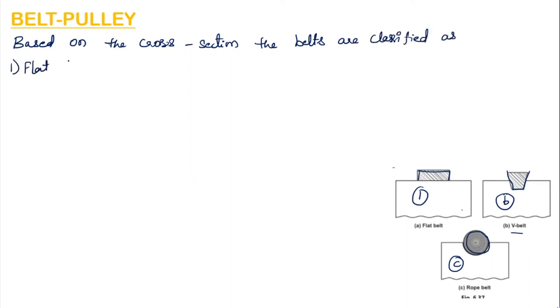From figure B we can see the V belt — its shape appears like a V, which is why it is named the V belt. The third type is the rope belt, which is circular in cross section. Based on cross section, the belts are classified as flat belts, V belts, and rope belts.